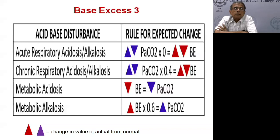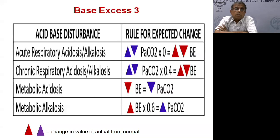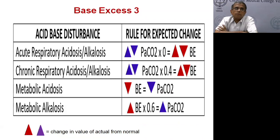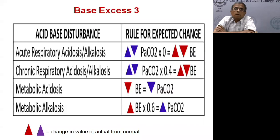Standard base excess correction factors: in acute respiratory acidosis or alkalosis, the change in base excess is zero — it does not influence base excess. For chronic respiratory acidosis, it is 0.4 times the PCO2 change. For metabolic acidosis, the change in base excess should equal the change in PCO2. For metabolic alkalosis, it is 60%. These reduce to essentially two equations that are practical to remember.